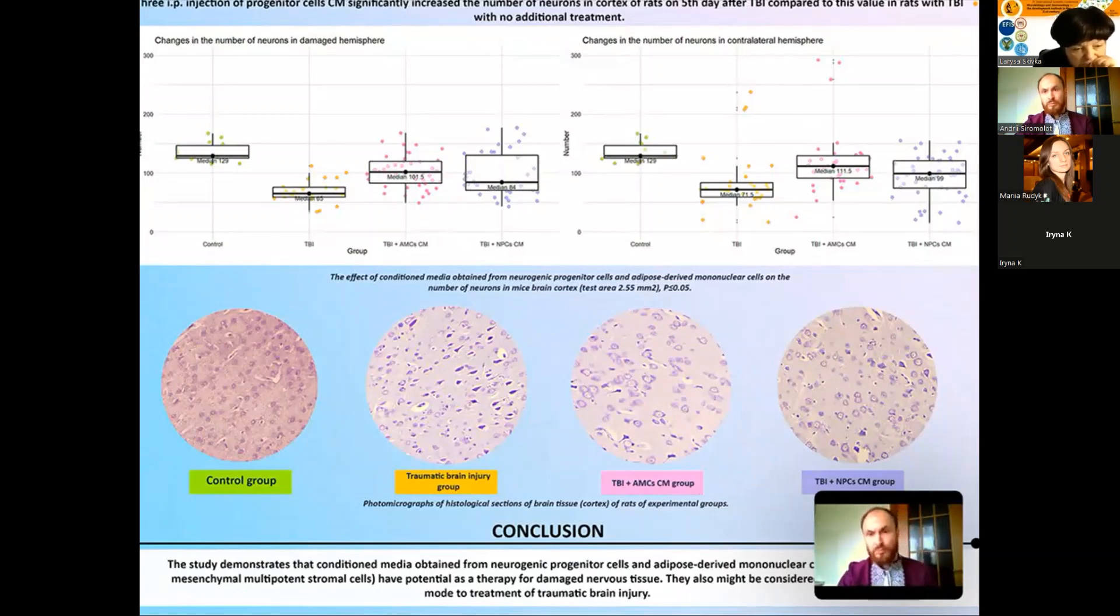The increase of the neurons number in the brain cortex of rats treated with neurogenic progenitor cells conditioned media and adipose-derived mononuclear cells cultured medium after traumatic brain injury comparing to the untreated ones suggests that the general neuroprotective effect of conditioned media obtained from these cells on the nervous tissue. The increase in total number of neurons in damaged as well as in unaffected hemispheres could indicate anti-apoptotic and life-sustaining effect of the medium.